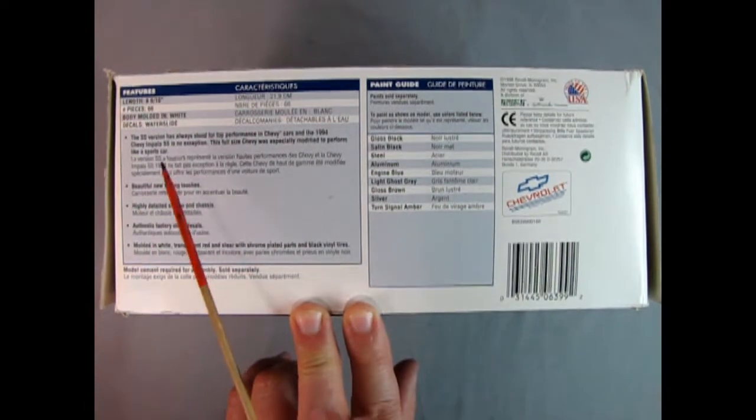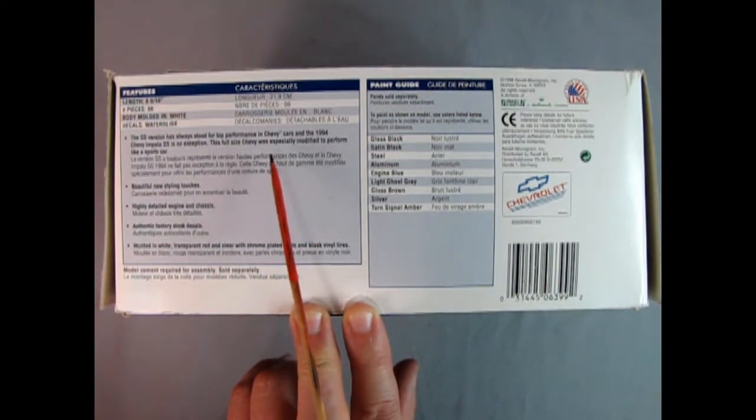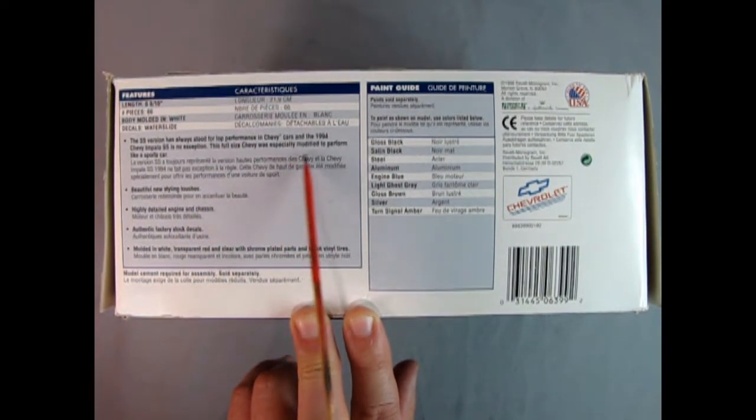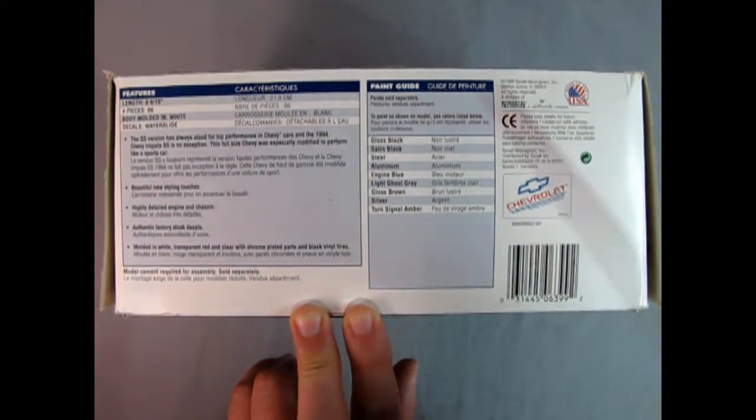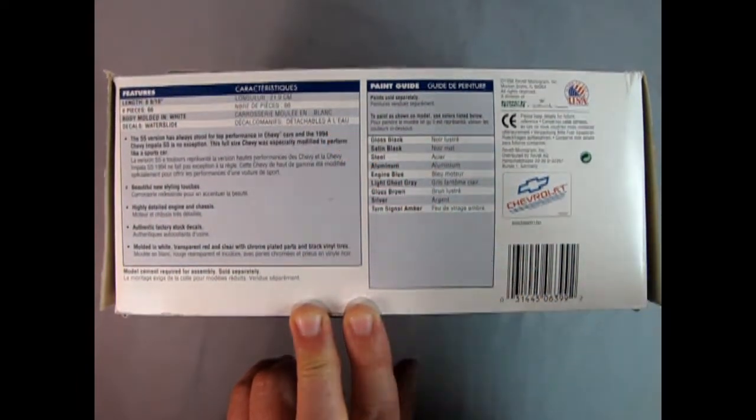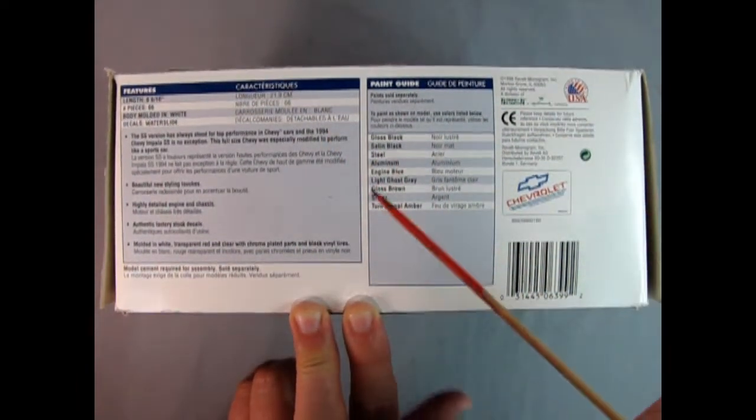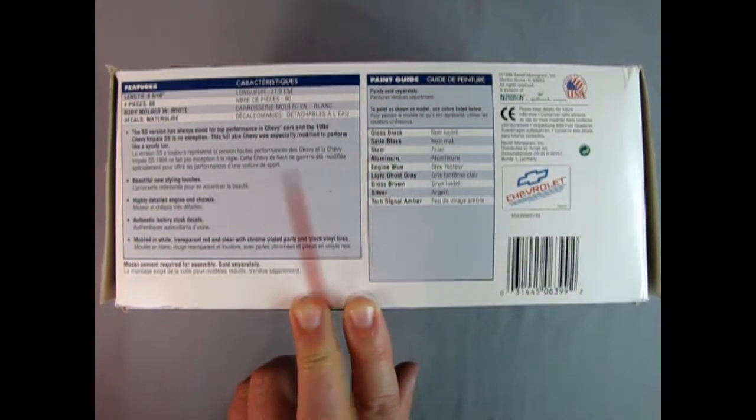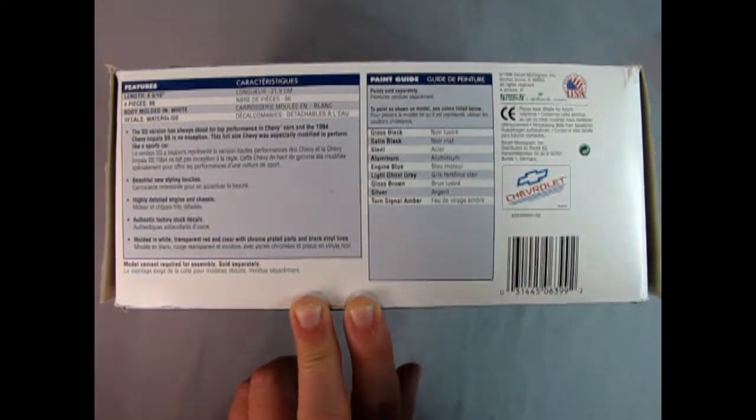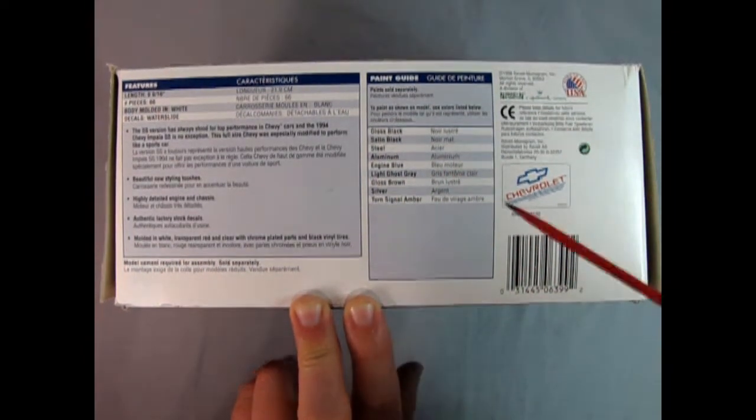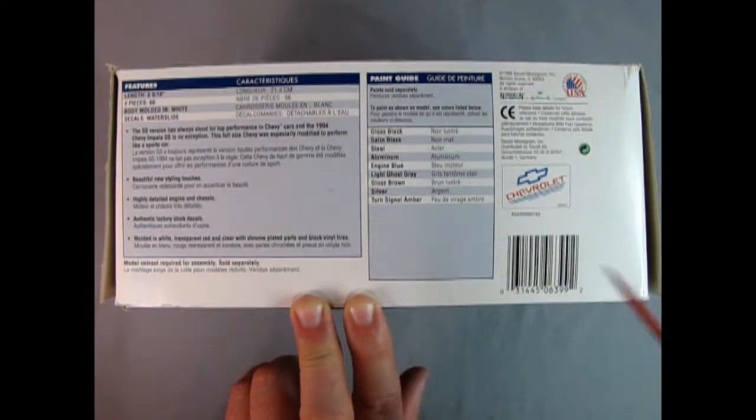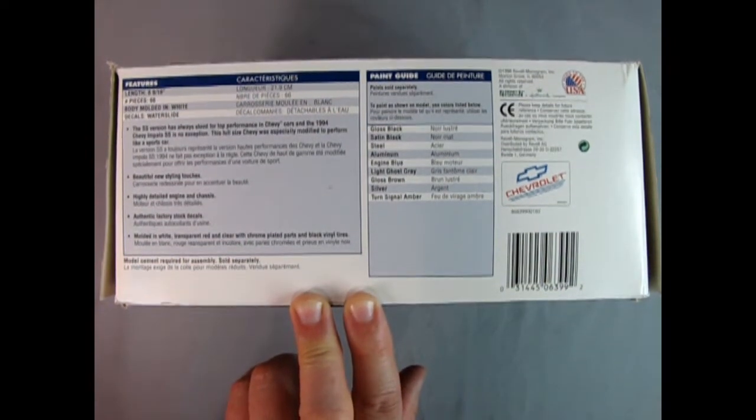It says the SS version has always stood for top performance in Chevy cars and the 1994 Chevy Impala SS is no exception. This full-size Chevy was especially modified to perform like a sports car. Interesting because this is made in '98 and inside it was talking about the '96. So what year is this thing exactly? It's probably a '94. Anyway, there's the paint guide as well and all the rest. So again, really wonderful from Monogram.